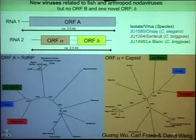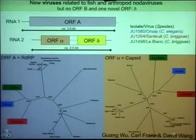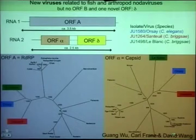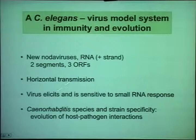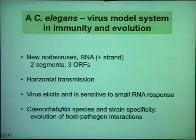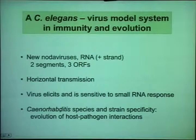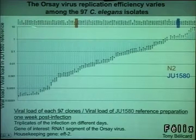Each of the viruses may be specific to a species — the Orsay virus named after the place I found it infects C. elegans, and Santeuil and Le Blanc infect C. briggsae. They have the same genomic structure with three open reading frames: a polymerase, a capsid, and an unknown function. They are related to nodaviruses by the capsid and polymerase, but this structure doesn't exist in other nodaviruses of arthropods and fish. This is now being used by several labs to study immunity against viruses, especially the role of small RNA response and RNAi.